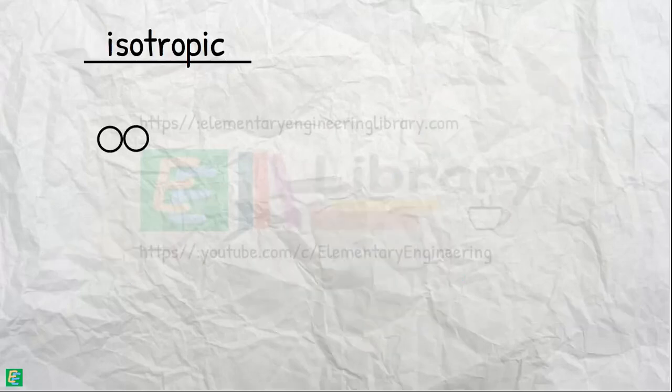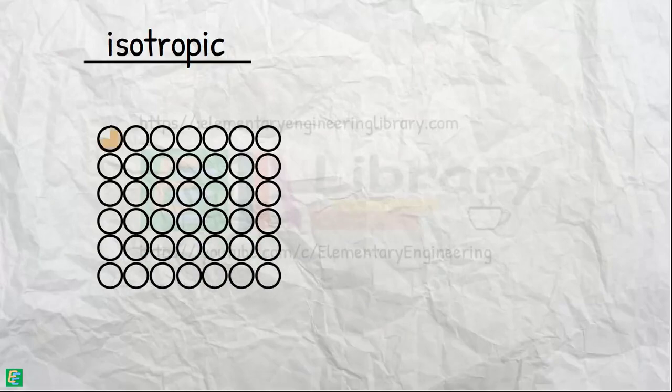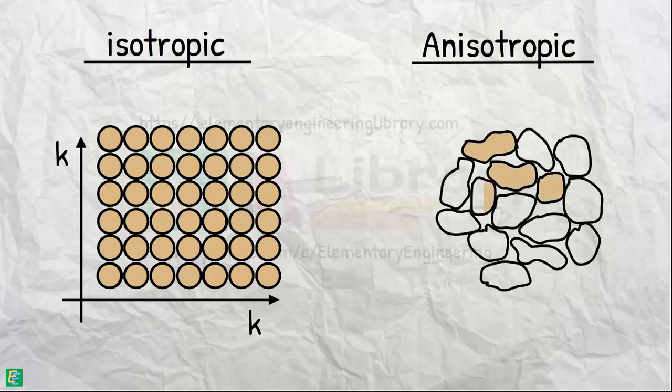Isotropic means having identical values of a property in all directions, and anisotropic means different properties in different directions.